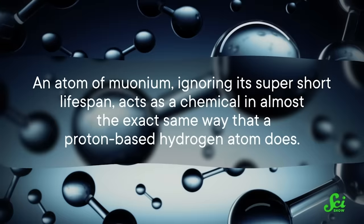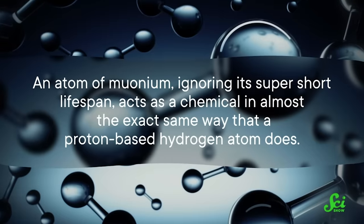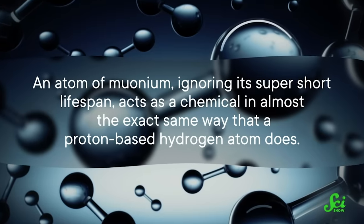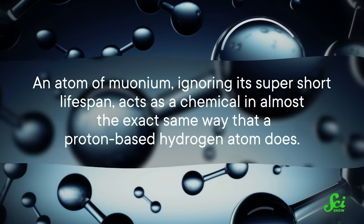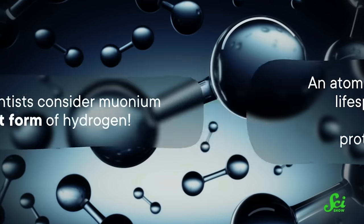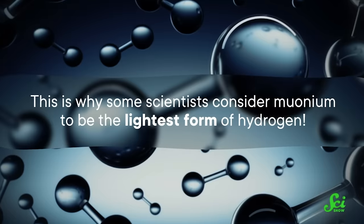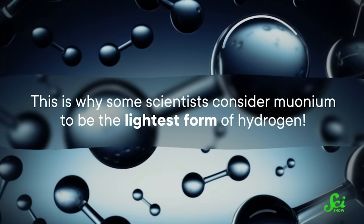And when it comes to chemistry, the difference in mass between a proton and an antimuon doesn't matter nearly as much as their identical electric charges do. So an atom of muonium, ignoring its super-short lifespan, acts as a chemical in almost the exact same way that a proton-based hydrogen atom does. This is why some scientists consider muonium to be the lightest form of hydrogen.